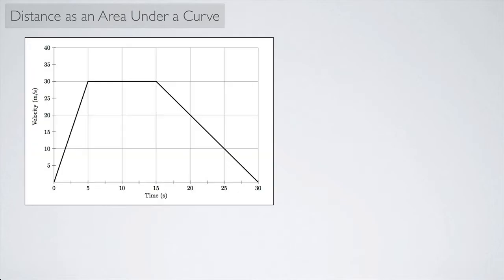Imagine we have a person traveling and we have a graph of their velocity versus time, and we want to know how far did this person travel in 30 seconds. Well, we can think of distance traveled as an area under a curve of a velocity versus time graph.